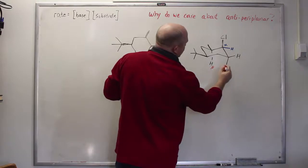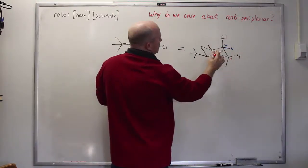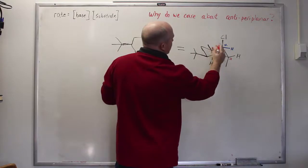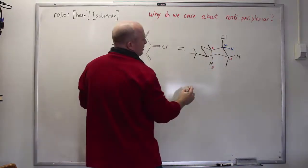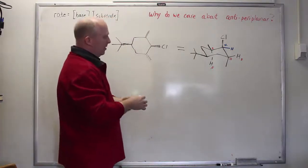These are the beta hydrogens. This is the beta carbon. If this carbon is the alpha carbon, that's the beta carbon. That is the beta carbon. This is a beta hydrogen that potentially could be eliminated. This too is a beta hydrogen that also could potentially be eliminated.